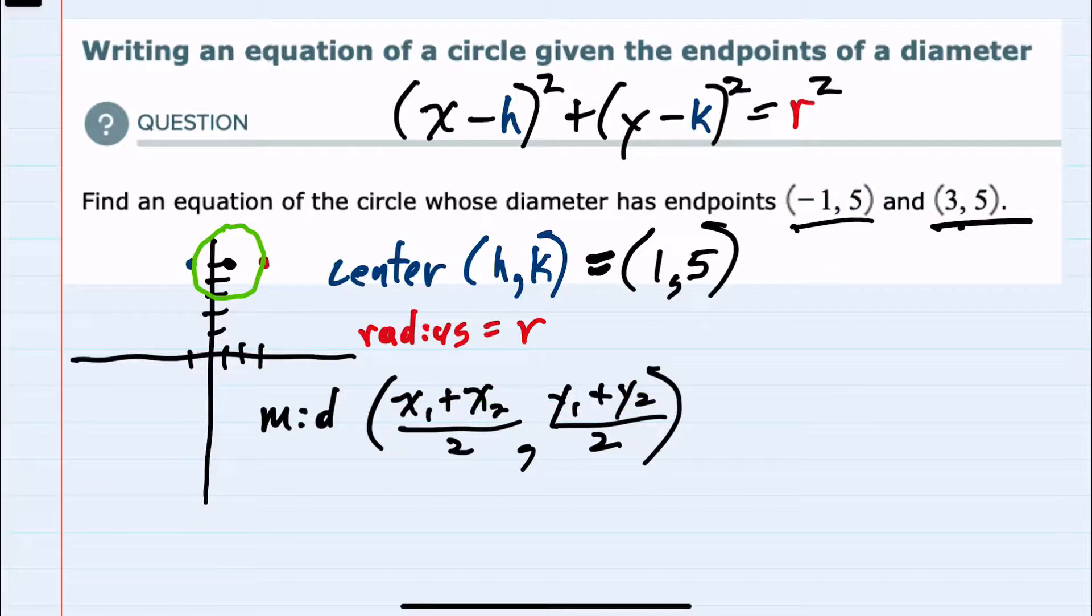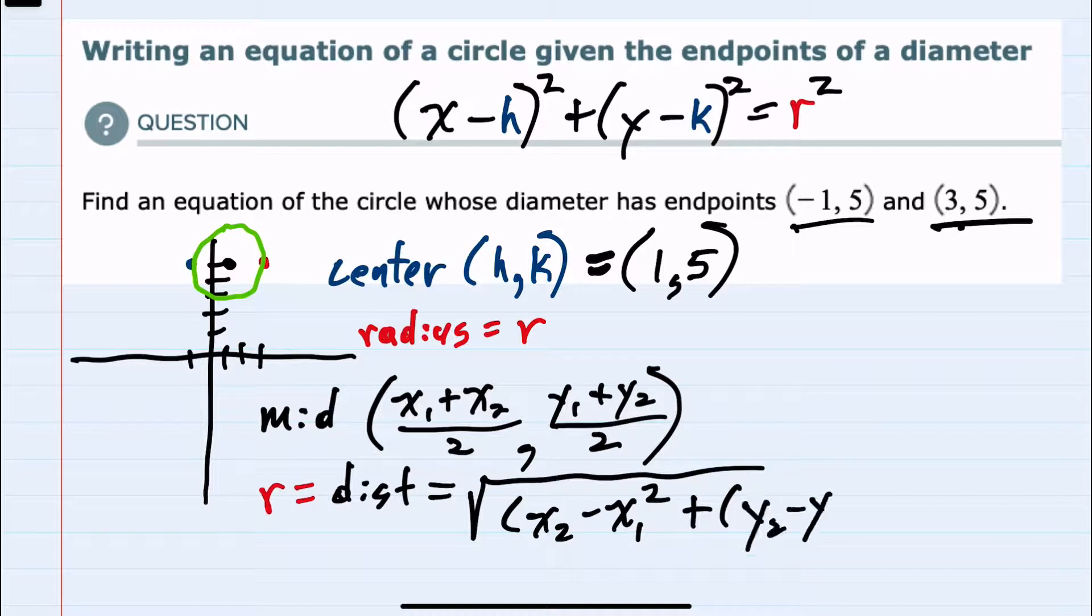Likewise, the radius could be found by doing the distance formula, where d equals the square root of (x2 - x1)² + (y2 - y1)². And taking the square root of that, we would just have to be careful here that since we're looking for the distance,